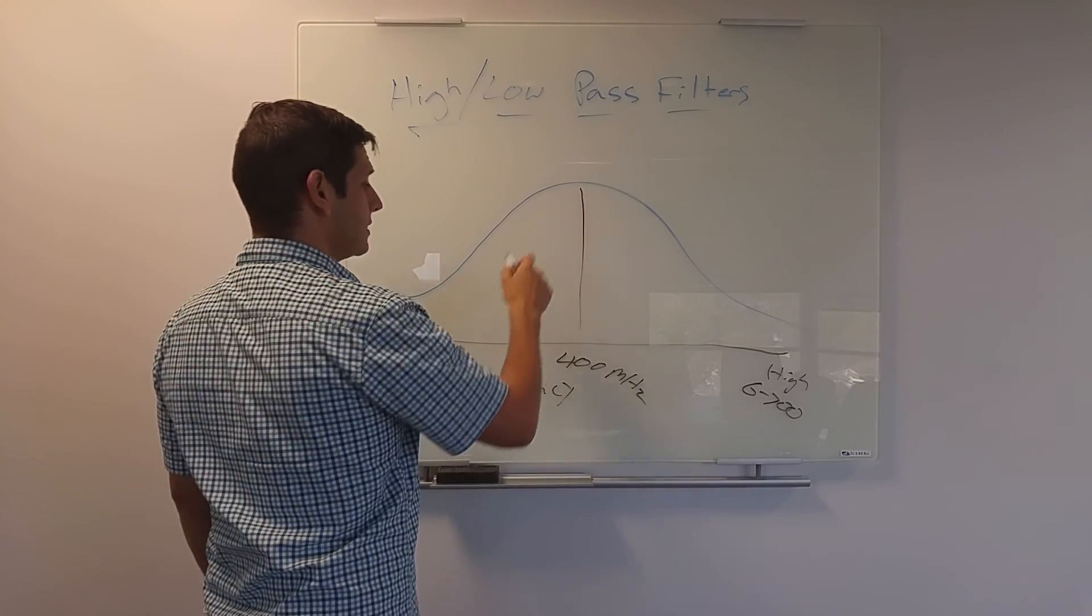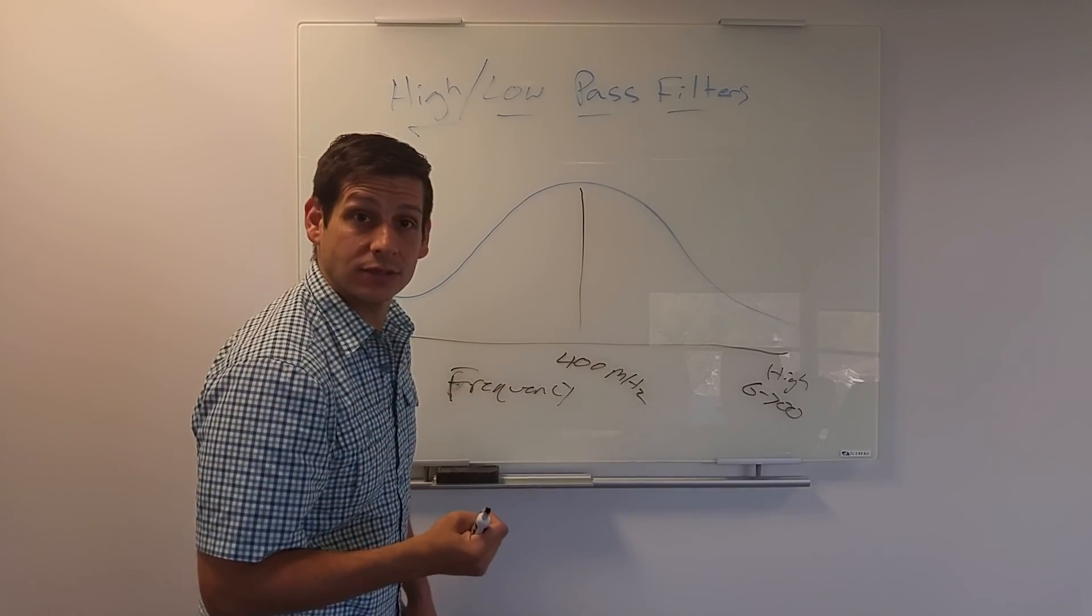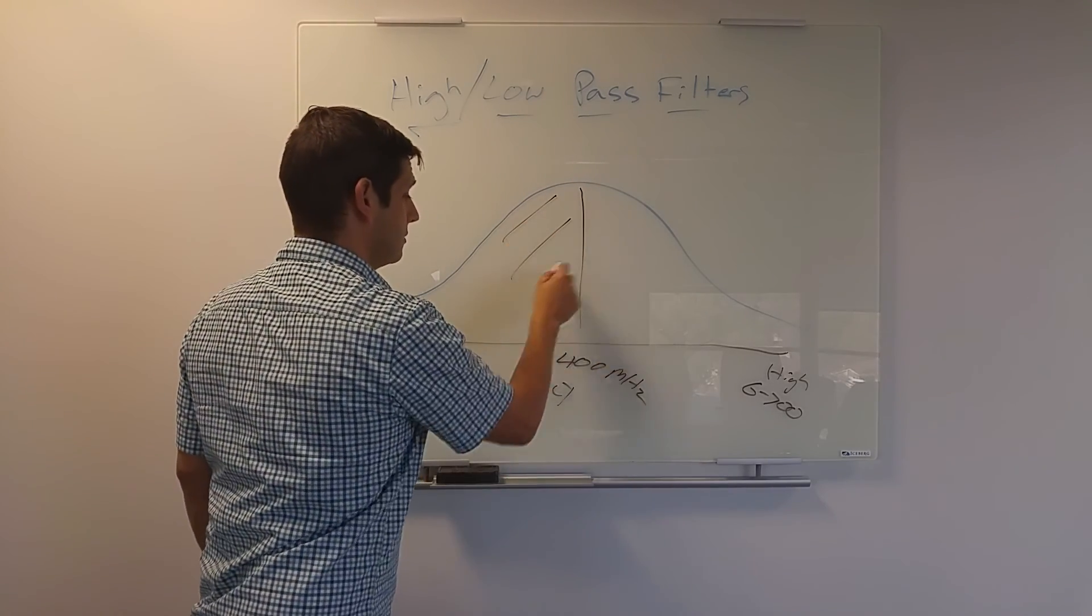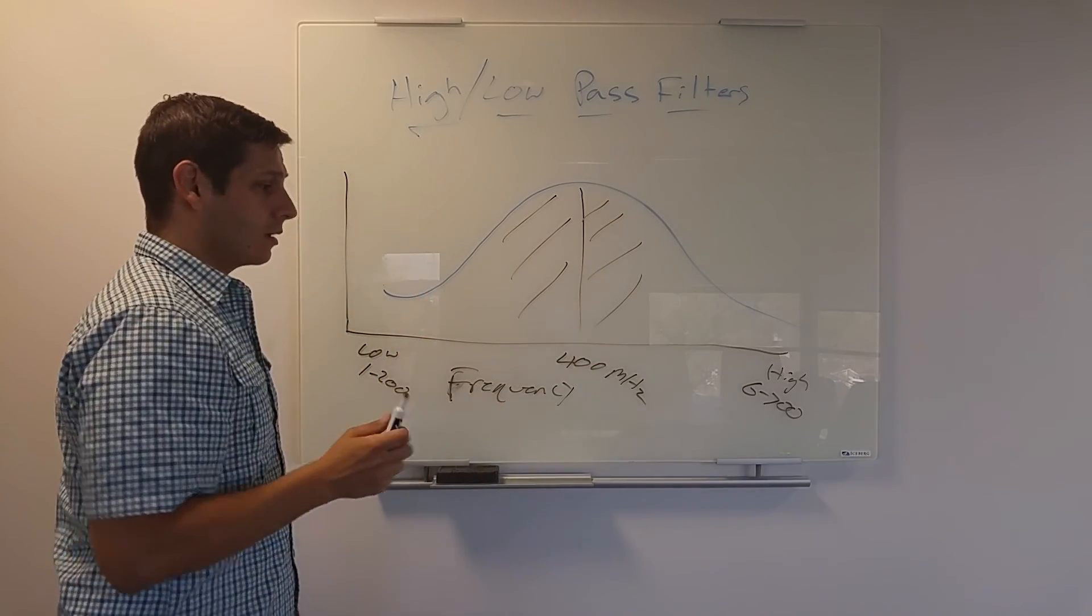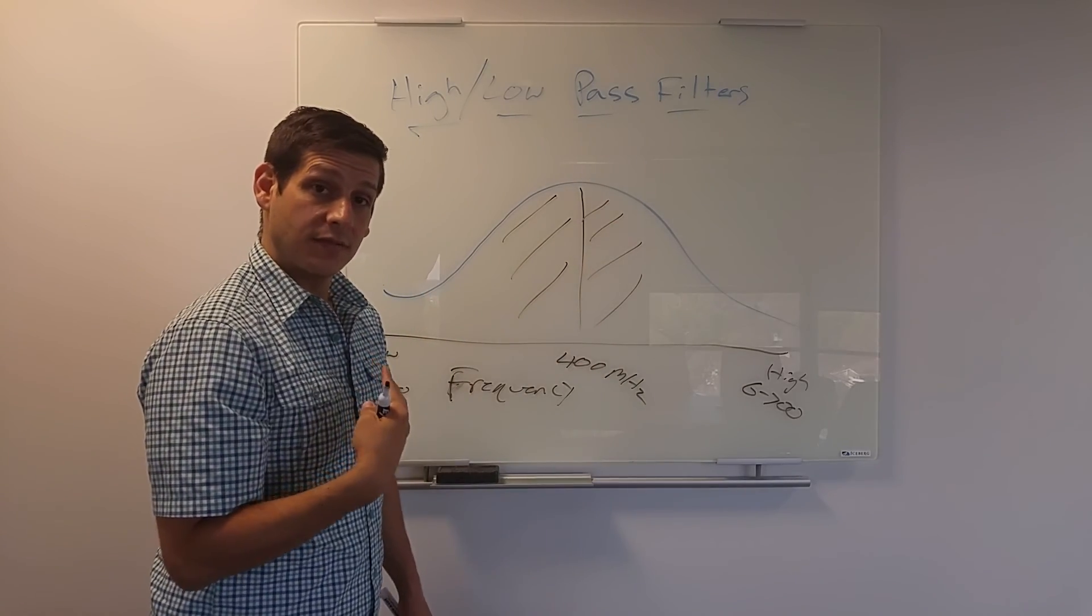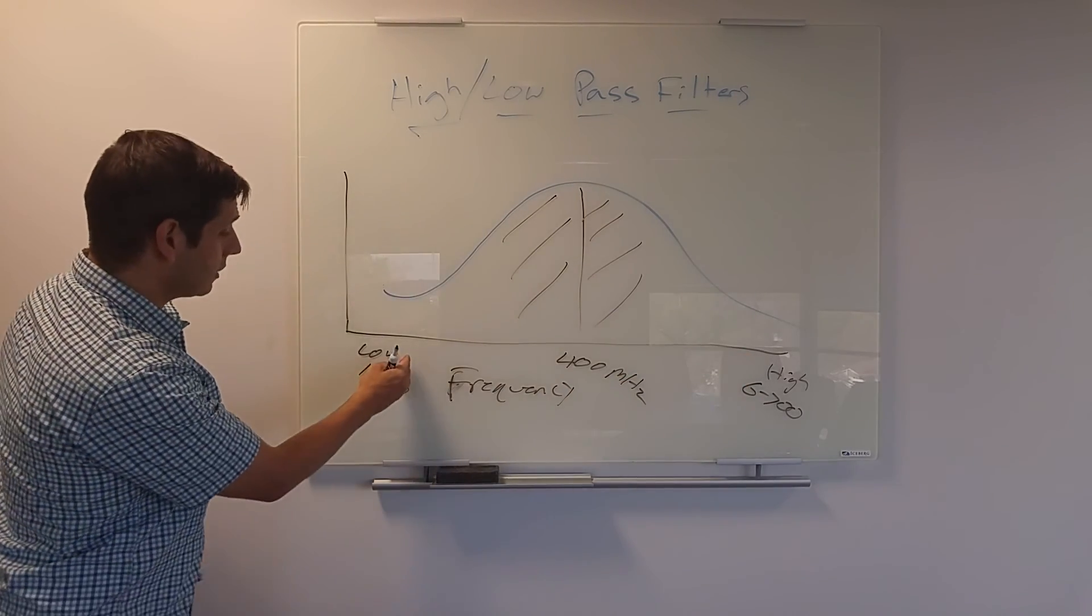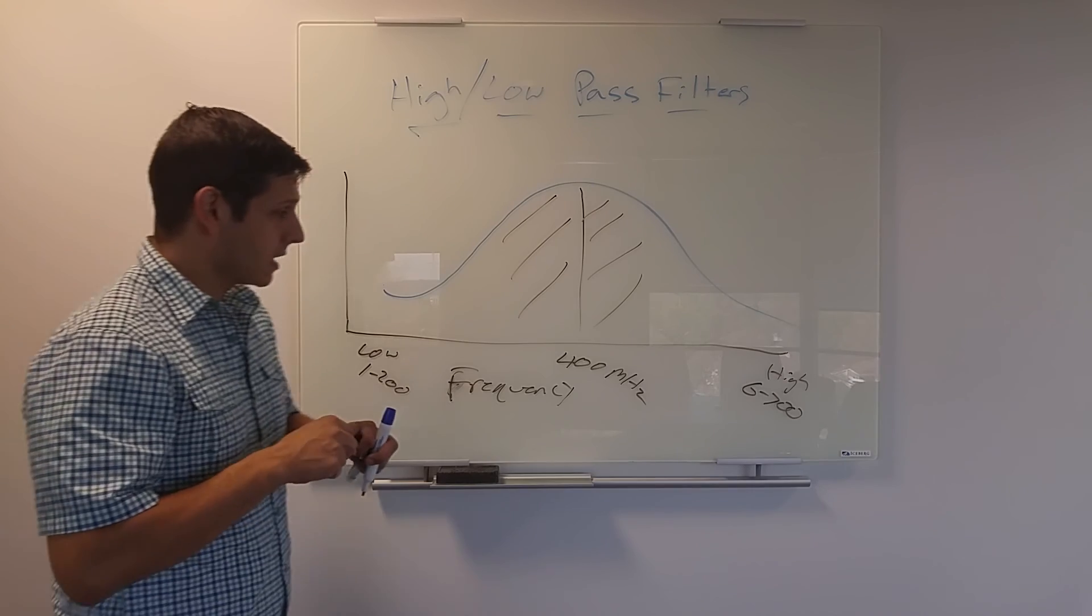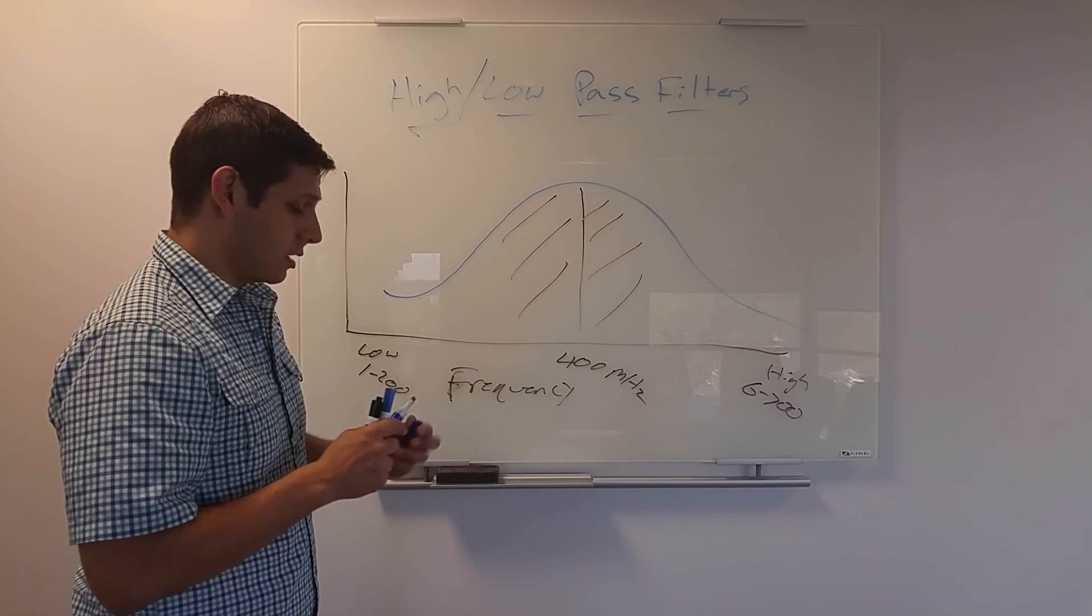So most of it is coming under plus or minus 100 megahertz. This is where most of it is coming. But some response that the GPR gets in will actually be at the higher end. And some will be at the lower end. So there is an actual distribution of your frequency.